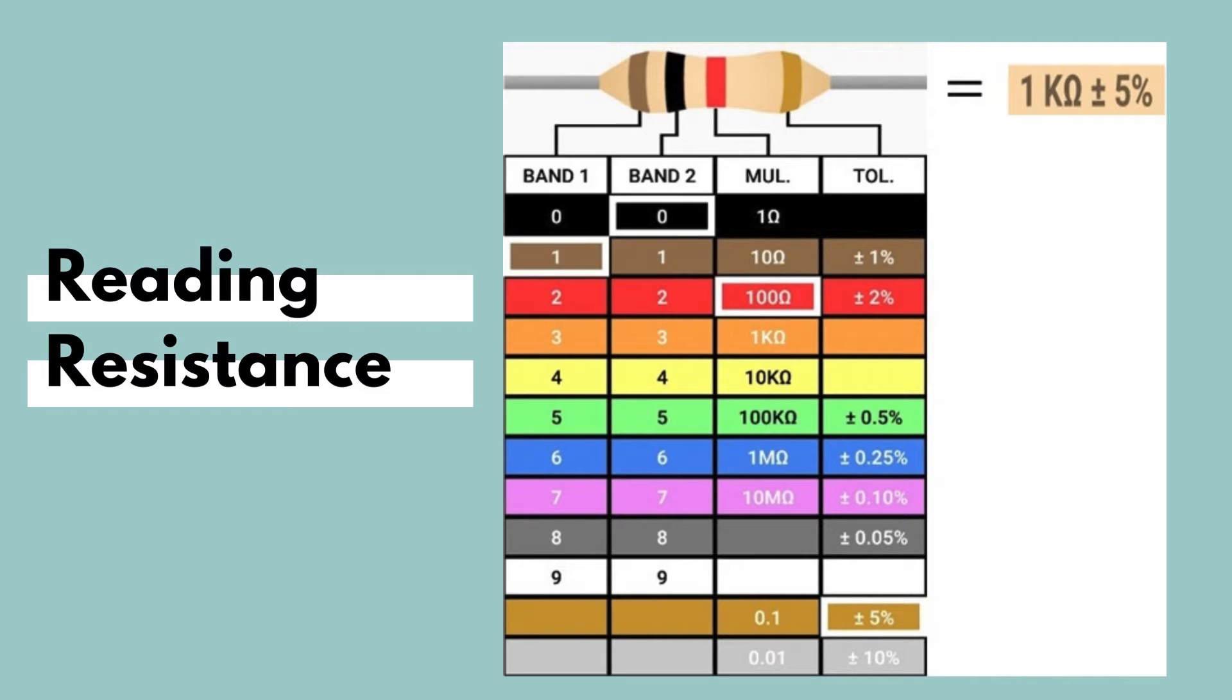The third band represents another quantity called the multiplier. The multiplier represents the power you need to multiply the first two resistor digits that were presented by the first two color bands. Since the multiplier here is red, we would need to multiply the 10 by 100, and this would give us 1000 ohms, which can also be called a 1 kilo ohm.